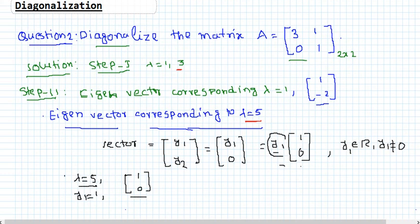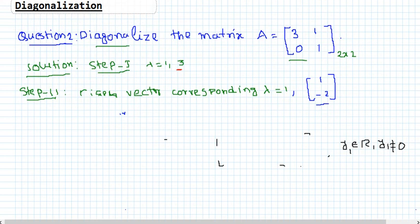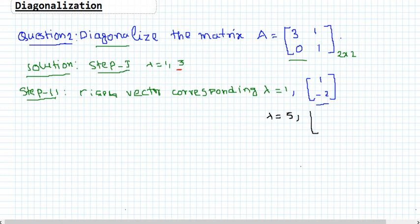So from step 2, corresponding to eigenvalue 1 we get eigenvector [1, -2], and corresponding to eigenvalue 3 we get eigenvector [1, 0]. We have a 2 by 2 matrix and we get two eigenvectors. In step 3, we need to check whether these two eigenvectors are linearly independent or dependent, and then find the modal matrix.